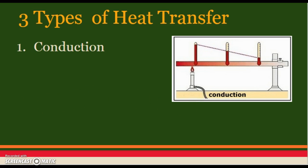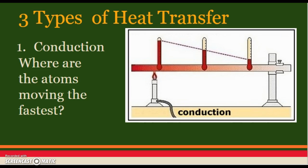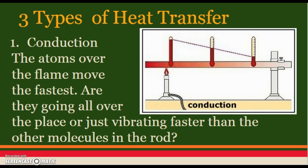Of course there's some math behind it, but I'm not going to make you do the math — you can all take a second to rejoice. So, conduction: where are the atoms moving the fastest along this metal rod? Well, it's hottest here, so they're moving the fastest closest to the flame. The atoms over the flame move the fastest.